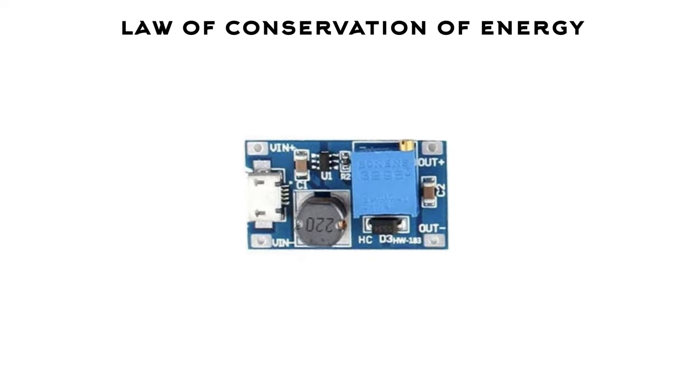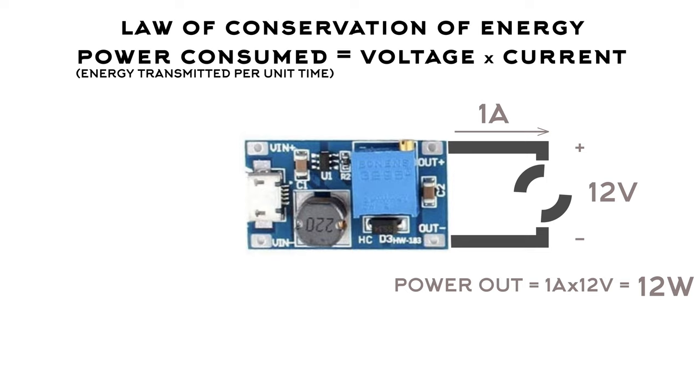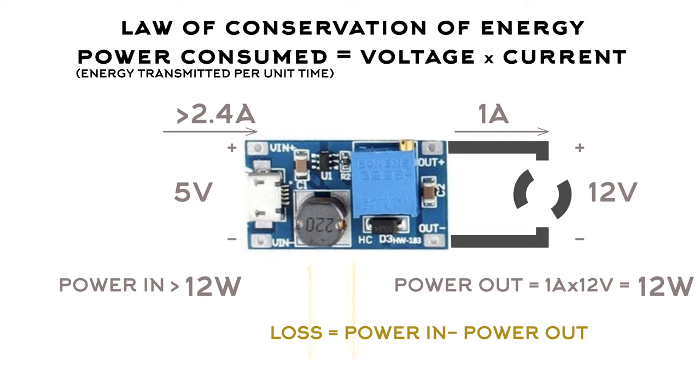If my motor draws one amp of current at 12 volts, then it's consuming 12 watts of power, or 12 joules per second, and this output energy cannot be more than the input energy, meaning the input energy has to be at least 12 joules per second. With 5 volts at the input, that means the converter is drawing 2.4 amps of current, and it's probably higher than that due to inefficiency in the circuit. That is to say, some energy is lost as heat. So there's a little engineering lesson for you: when you amplify output voltage, you're also amplifying input current.